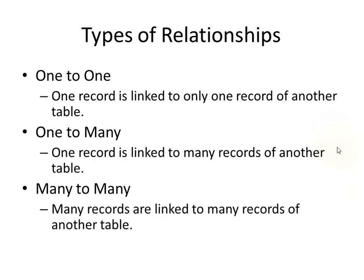There are three different types of relationships. One-to-one means you have one record linked to one record of another table. One-to-many means you have one record linked to many records of another table. And many-to-many means you have many records linked to many records of another table.